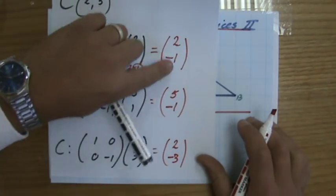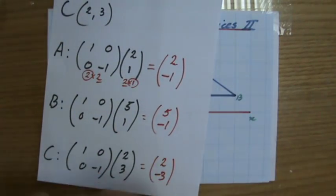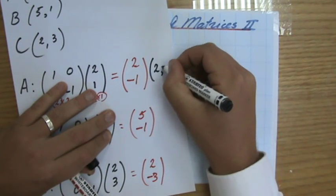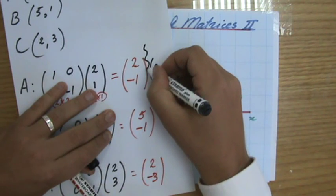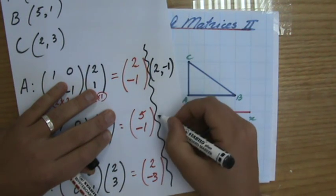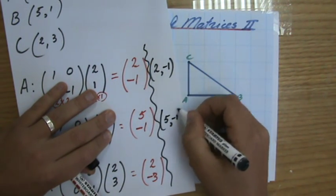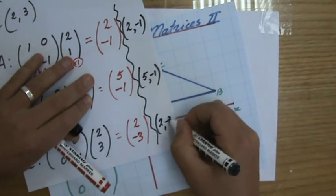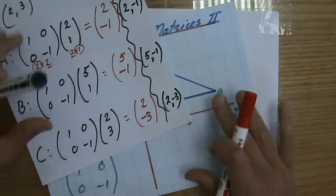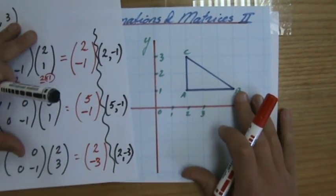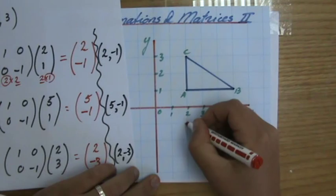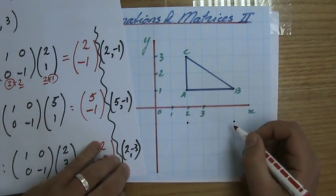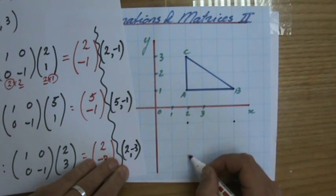And now these three matrices are your coordinates after the transformation. So that's coordinates 2, minus 1. And here that's coordinates 5, minus 1. And coordinates 2, minus 3. And then you put those coordinates. So 2, minus 1 is there. And 5, minus 1 is there. And 2, minus 3.